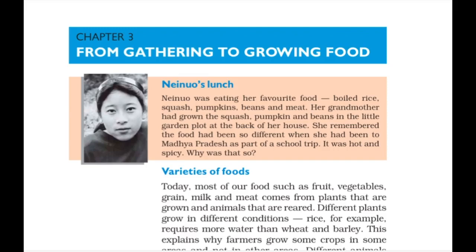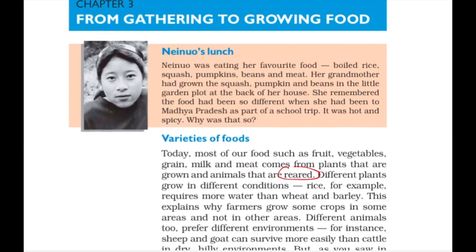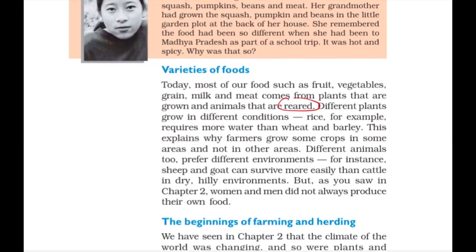Today we eat food which includes fruits, vegetables, grain, milk, and meat — all of these come from reared animals and plants. But this was not earlier the case.